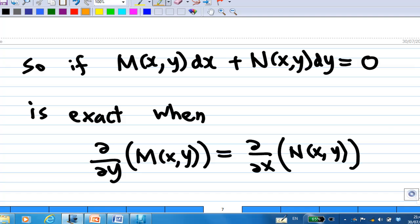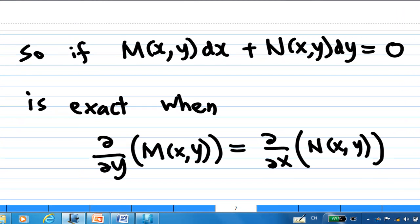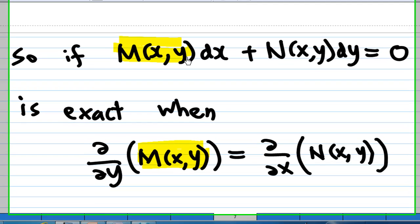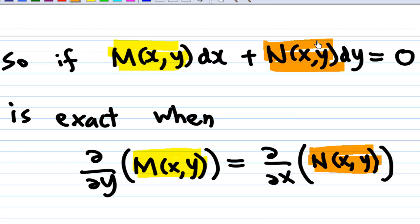So, given M(x,y) dx plus N(x,y) dy equal to zero, you can test whether this is exact by checking: partial differentiation of M with respect to y, and partial differentiation of N with respect to x. If they are equal, then we know the equation is exact.